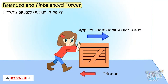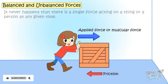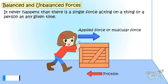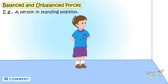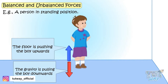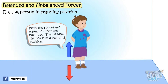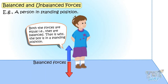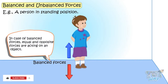Forces always happen in pairs — it never happens that there is any single force acting on a thing or person. Let's learn it with examples. If a boy is standing, there are two forces acting on him: the floor is pushing the boy upwards and gravity is pulling the boy downwards. Both forces are equal, that is, they are balanced, so the boy remains in the standing position.